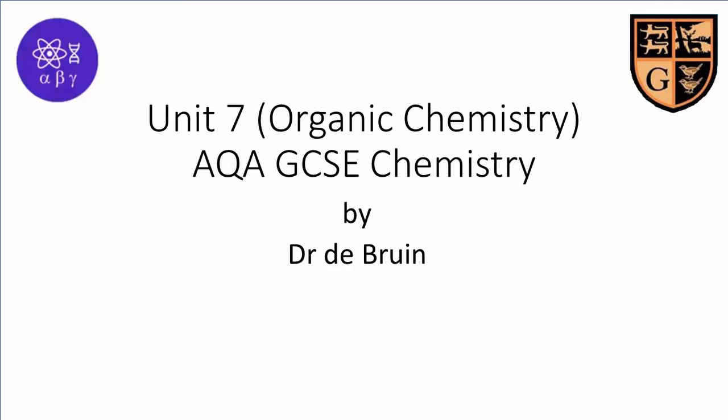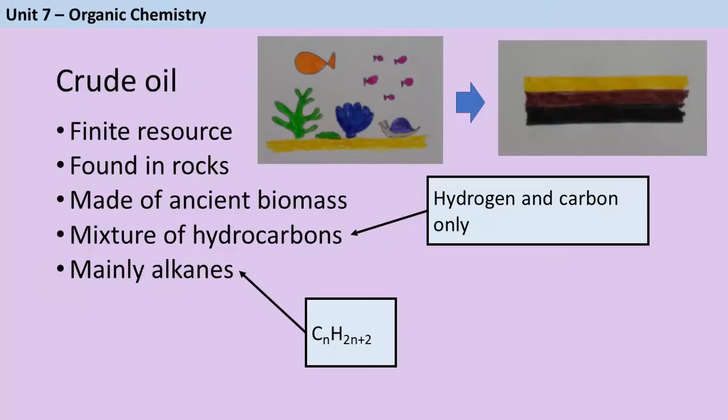This unit starts off by talking all about crude oil. You need to know that crude oil is a finite resource found in rocks, which means that it's going to run out, and it is the remains of an ancient biomass consisting mainly of plankton that was buried in mud. So basically we're talking about lots of lovely sea creatures which died, then sand fell on top of them and turned into rocks, and meanwhile they turned into fossil fuels like crude oil. It is a mixture of hydrocarbons, which are compounds made out of hydrogen and carbon only, and those hydrocarbons are mainly a type of hydrocarbon called alkanes.